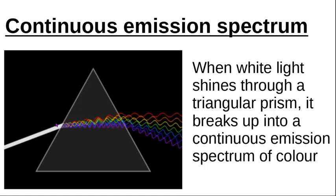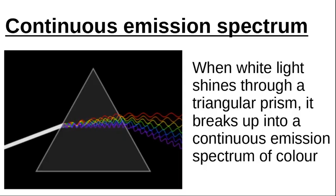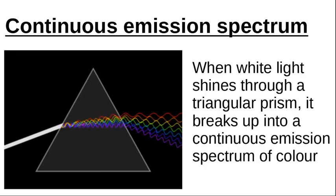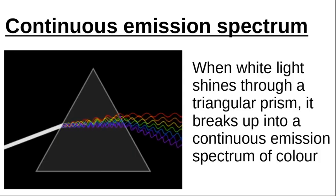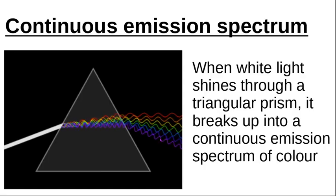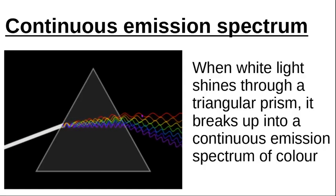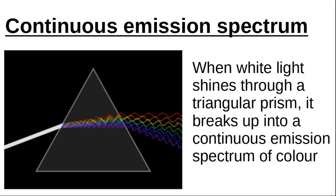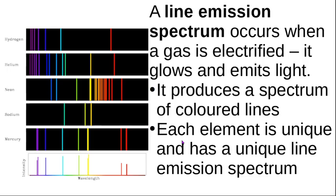If we shine white light into a prism, the light has different frequencies and wavelengths and is bent, or refracted, slightly differently as it moves through the prism. When it hits the other side it's refracted again as it moves into a different medium. So the prism breaks white light up into a whole set of different colors — the continuous spectrum, the rainbow of colors.